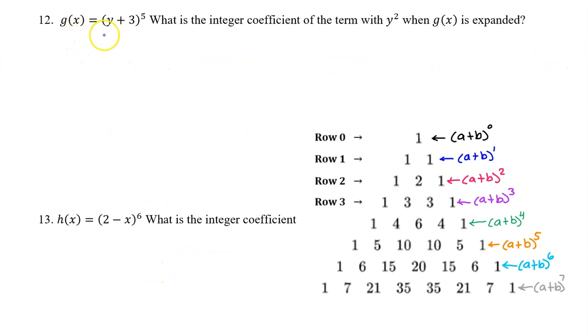Number 12. g(x) = (y + 3)^5. What is the integer coefficient of the term with y^2 when g(x) is expanded? The degree of the binomial is 5. So that puts us on this row.